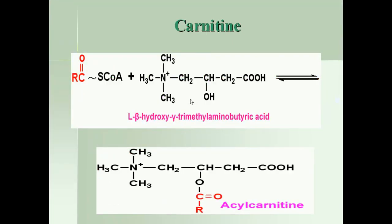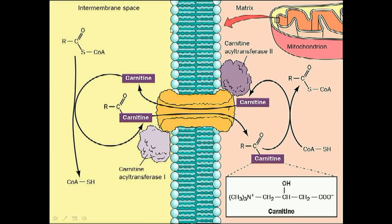Oxidation takes place in the mitochondrial matrix with the help of the carnitine shuttle complex. By this complex, cytosolic fatty acyl-CoA releases coenzyme A, attaches with carnitine, and fatty acyl-carnitine is translocated inside the mitochondrial matrix by the enzyme carnitine acyltransferase 1. Carnitine is then released and returns back to accommodate new fatty acids. The fatty acyl group then attaches with coenzyme A to make mitochondrial fatty acyl-CoA, which is ready to oxidize further. The whole reaction is catalyzed by carnitine acyltransferase 2.